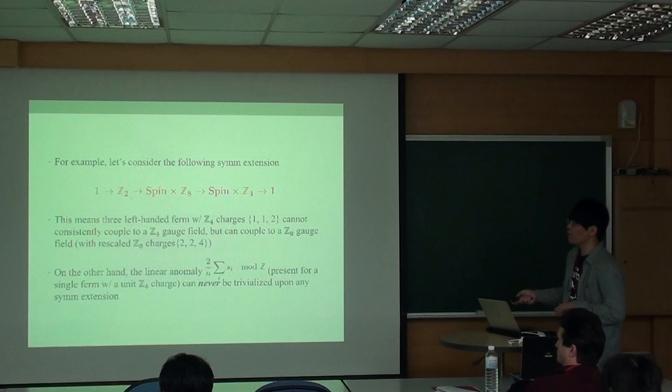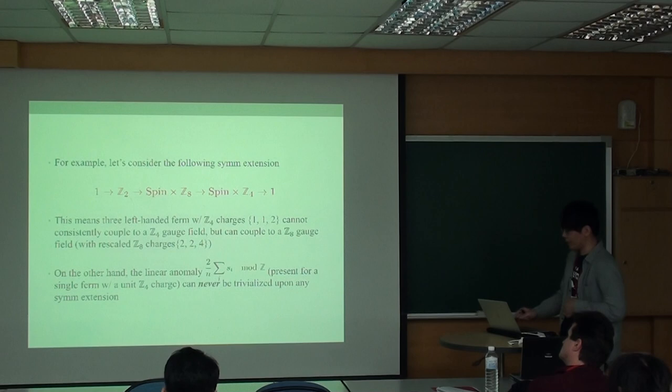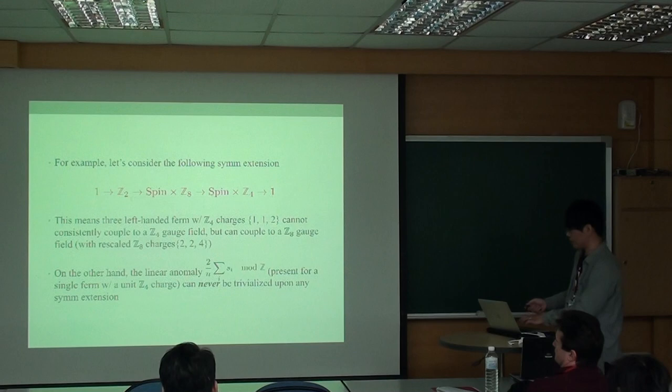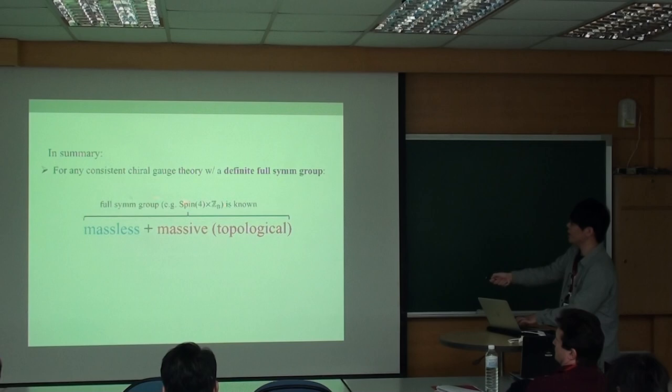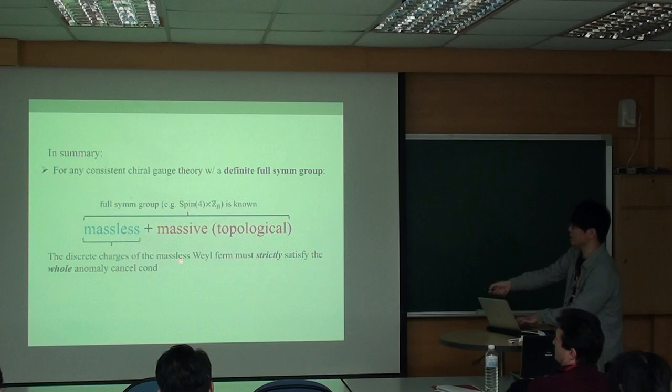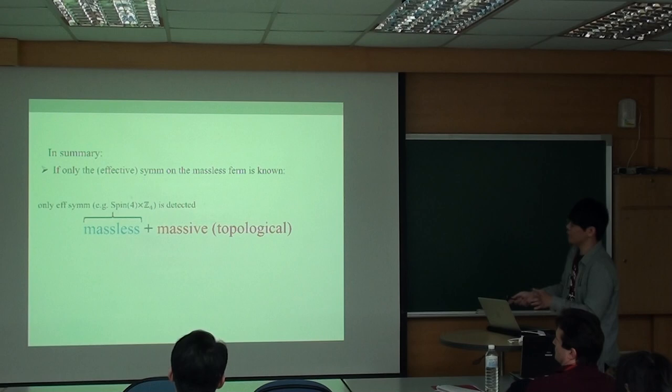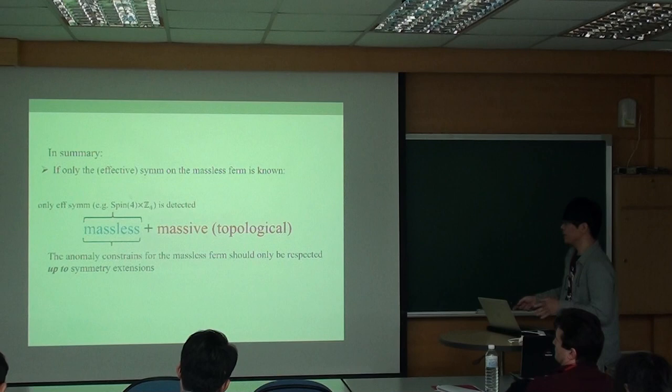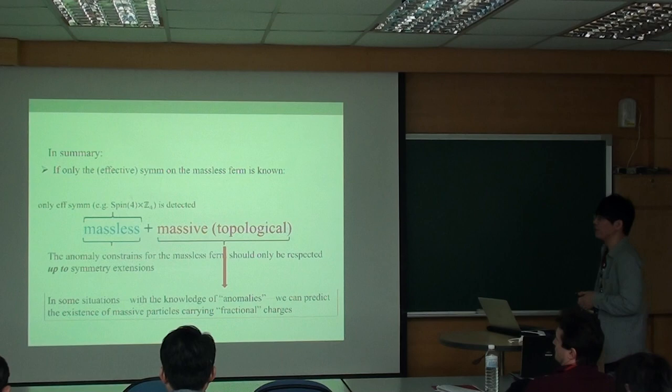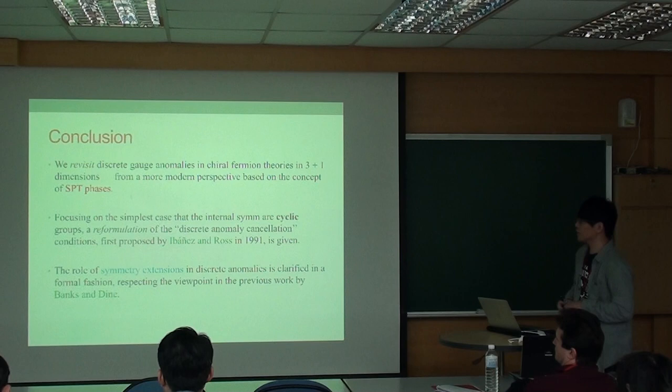On the other hand, the linear anomaly which is present for a single fermion with U(1) or Z4 charge can never be trivialized upon any symmetry extension. A ZN with a non-vanishing linear anomaly cannot be gauged. This last statement: for any consistent theory, the discrete charge on the massless part must strictly satisfy the cancellation condition in my formula - both linear and cubic. While only the effect on the massless part is detected, there are no constraints on the massive part. It should only be respected up to symmetry extensions. In some situations, with the knowledge of the anomalies, we can predict the existence of massive particles that carry fractional ZN charge.